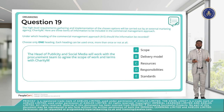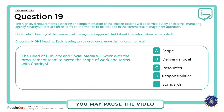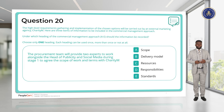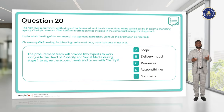Question 19. The head of publicity and social media will work with the procurement team to agree the scope of work and terms with Charity M. These are responsibilities that they hold, so the answer is Responsibility — heading D. Question 20. The procurement team will provide two experts to work alongside the head of publicity and social media during stage 1 to agree the scope of work and terms with Charity M. These are the resources we have, so this will be written under Resources — heading C.